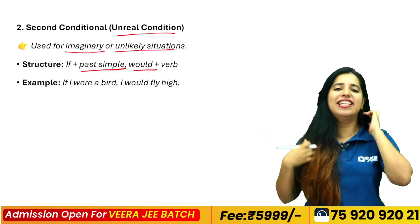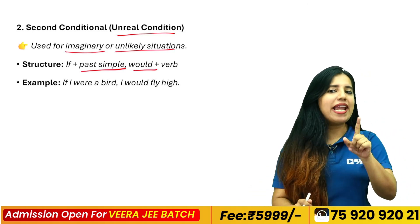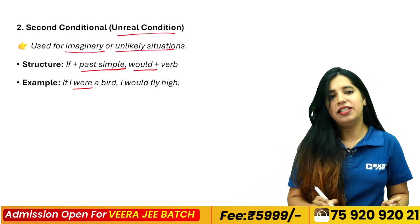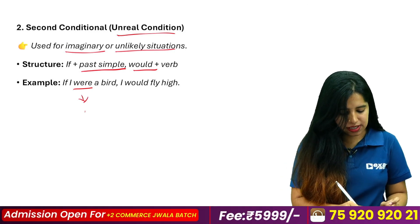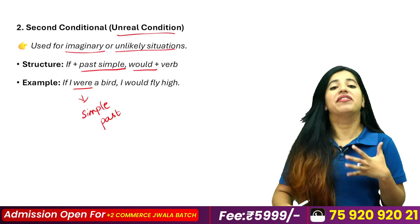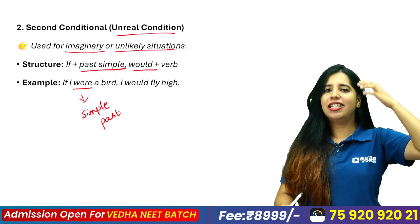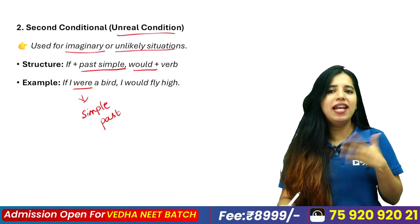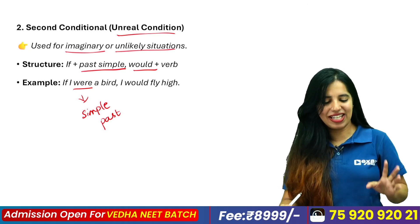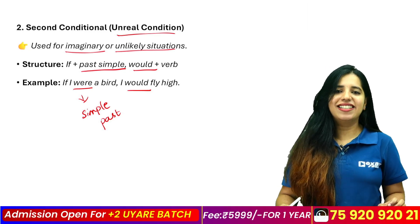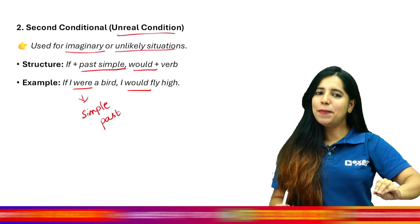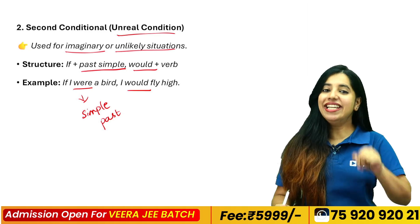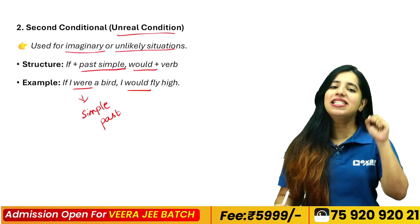Let's take an example. If I were a bird — it uses simple past. I'm a real person, not a bird. The main part uses 'would'. What is the first conditional? Simple present with 'will'. The second conditional uses simple past with 'would'.